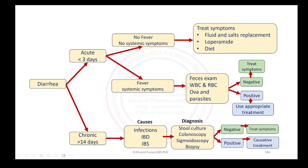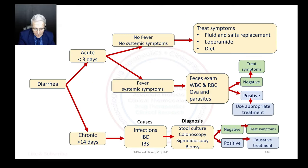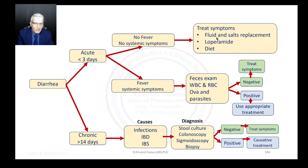This graph gives us guidelines on how to approach patients with diarrhea. If you have acute diarrhea lasting less than three days, we ask: does the patient have a fever? If no, are there any systemic symptoms? If no, we treat symptoms — try to replace fluids and salts such as sodium, chloride, potassium. We can prescribe loperamide and ask the patient to follow a specific diet to relieve symptoms and recover.